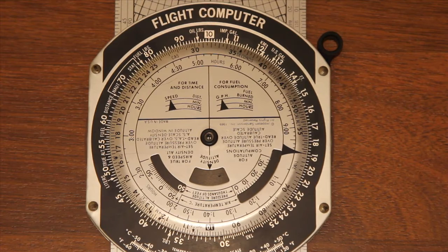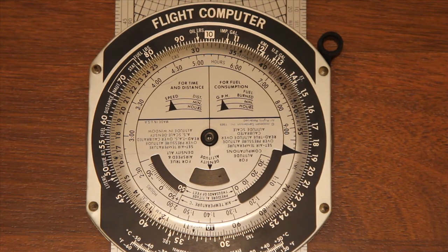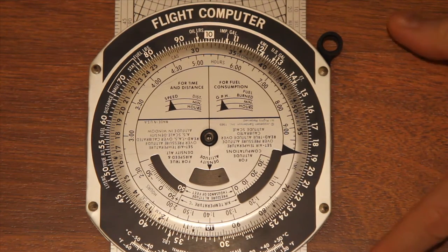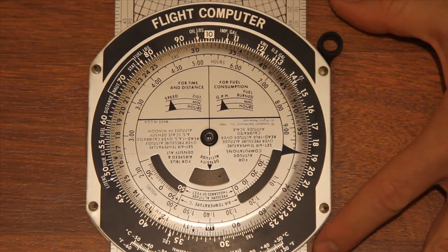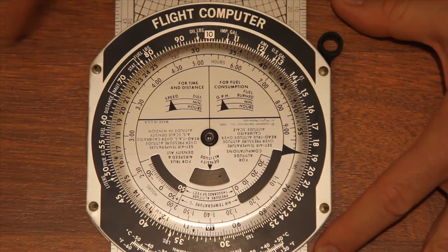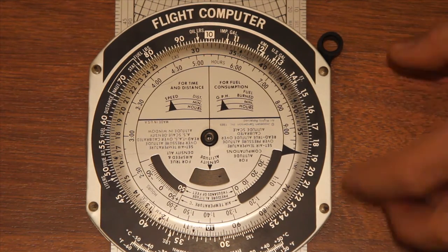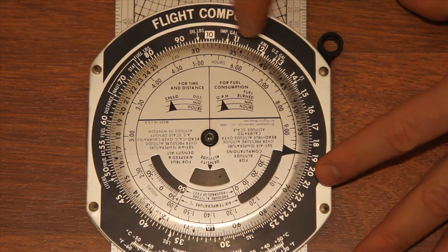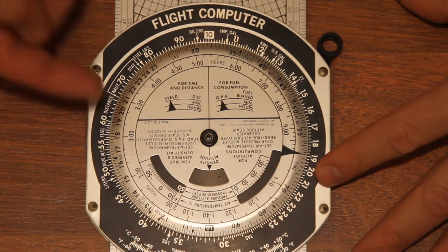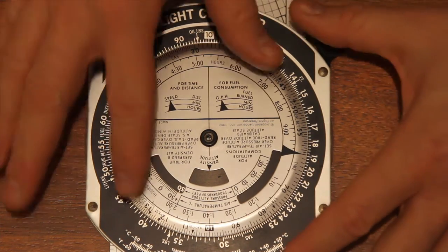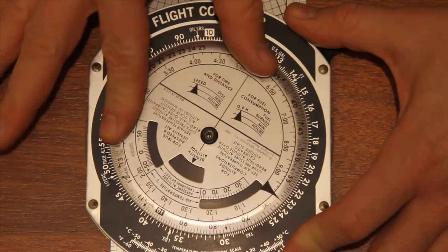So to introduce the E6B, I should show you some of the main functions and features. The flight computer has two main scales on it. It's a logarithmic circular slide rule. The outer scale here on the black and the inner scale here on the silver, and the center wheel here spins around.